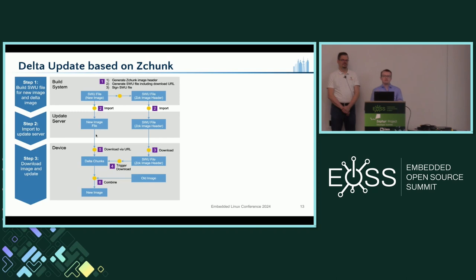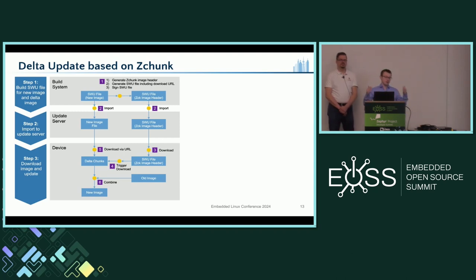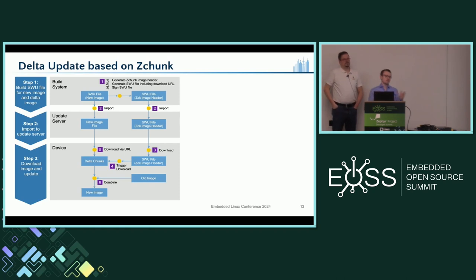You might think downloading chunk by chunk is inefficient — and there's an optimization that makes a big difference. This download uses HTTP range requests, meaning we can download whole ranges of chunks, even non-continuous ranges, in a single HTTP request. That also means if we do HTTPS, we only need to do the handshake once and can download all needed chunks, no matter where they are in the image. Basically all HTTP servers support HTTP range requests — even the Go built-in server — since all the big video platforms like YouTube use it.